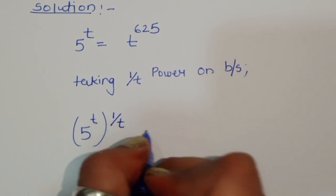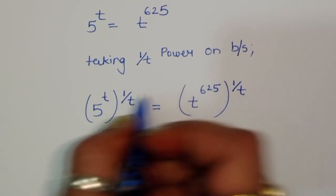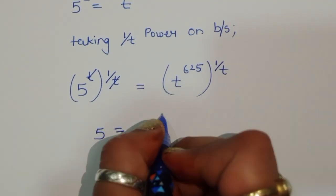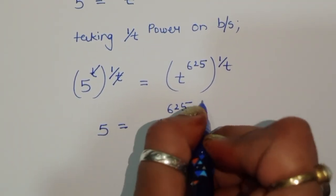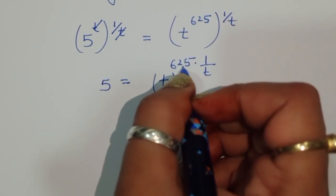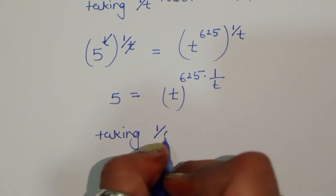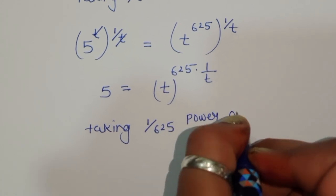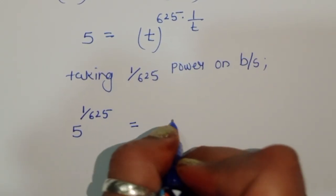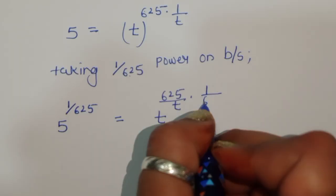Taking 1 upon t power on both sides, we get 5 power t to the power 1 upon t is equal to t power 625 to the power 1 upon t. Now t power 1 upon t — this t is cancelled from this t — so we get 5 is equal to t power 625 upon t times 1 upon t, which is t power 625 upon t.